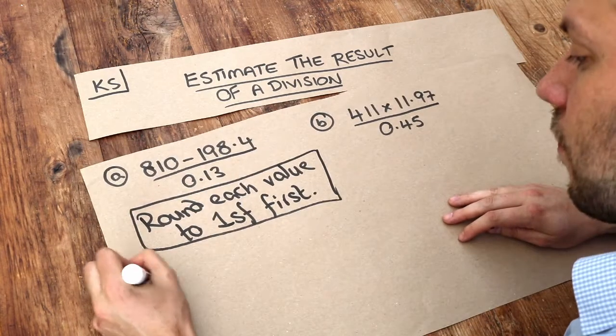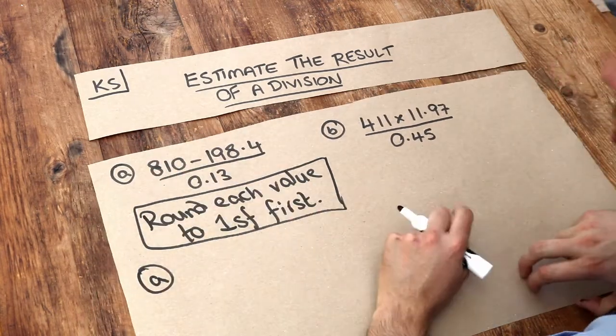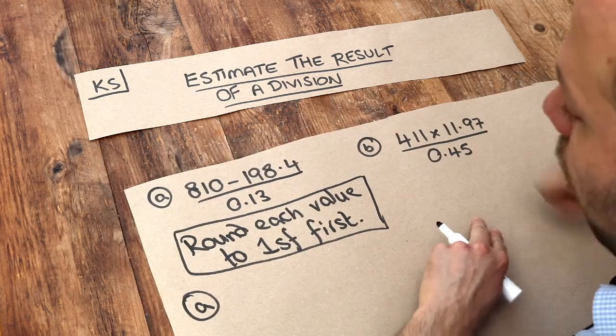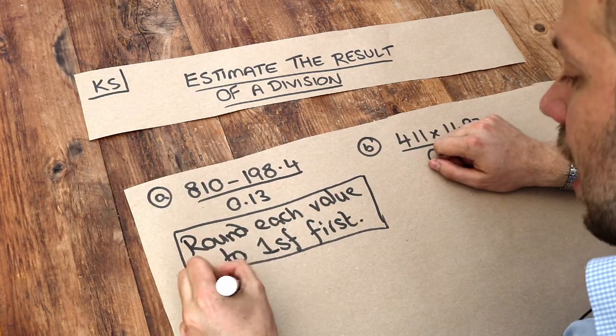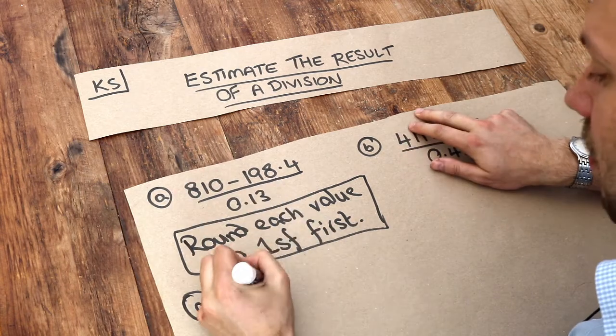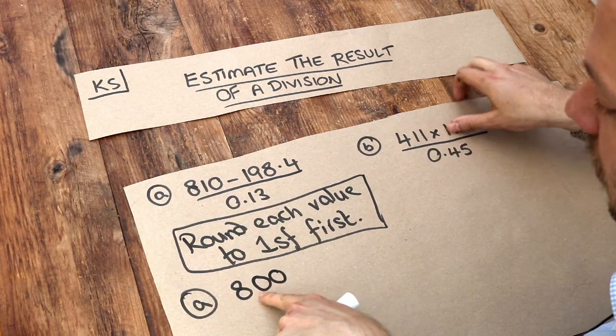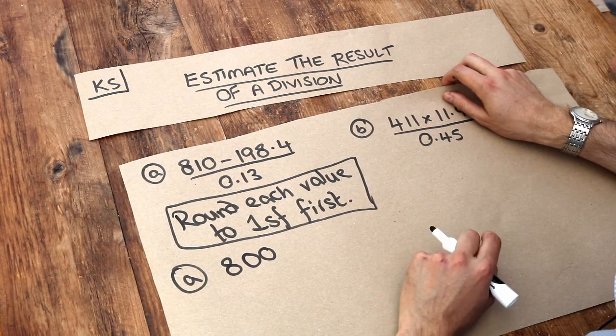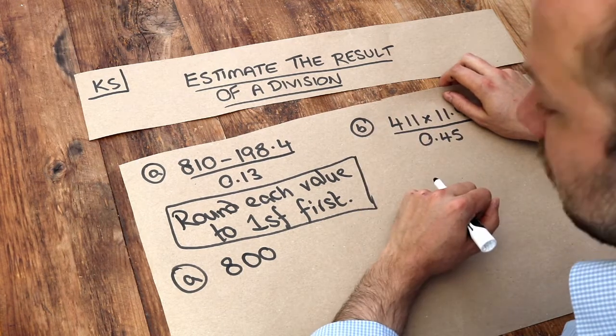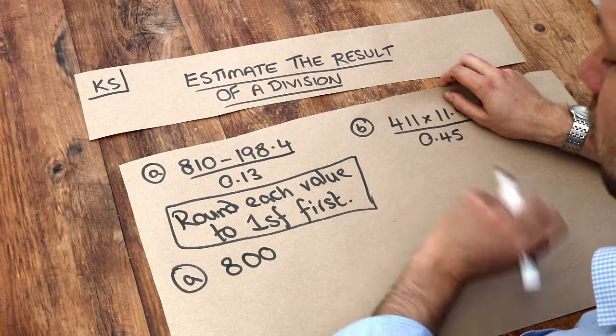So for A, if we round 810 to one significant figure, remember we only keep the first digit. So we keep the 8 and then all the other digits are just going to be replaced with 0, and that ensures that the 8 remains as the 100th digit. So that's 810 to one significant figure. If you've forgotten how to round to significant figures, then I recommend you watch that video first.